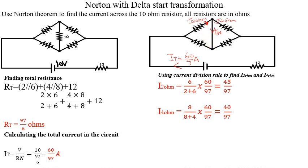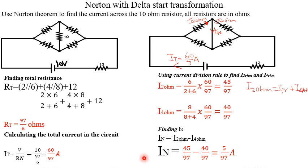Applying KCL at the node: I_2ohm equals IN plus I_4ohm. Therefore IN equals I_2ohm minus I_4ohm. Performing the subtraction gives us the value of IN. In Norton's theorem we need to find both the Norton current and the Norton resistance, so now let us find the Norton resistance.